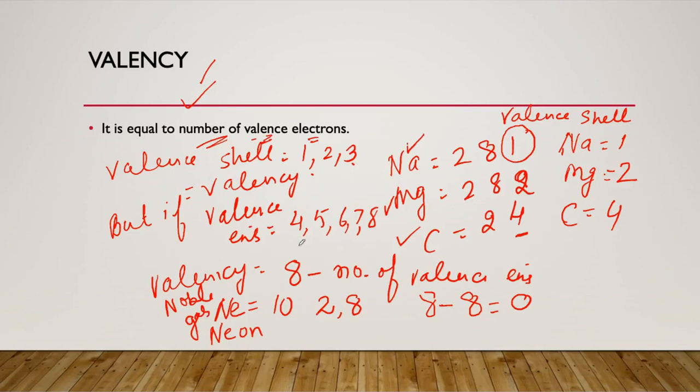Similarly, if I ask you to tell me nitrogen's valency, you all know nitrogen's atomic number is 7, so its electronic configuration is 2, 5. Its valency will be 8 minus 5, that is 3. This is how we can find all the valencies. Before we reach group and period, we need to know the element's electronic configuration and its valency. Now let's move to the next topic: period.